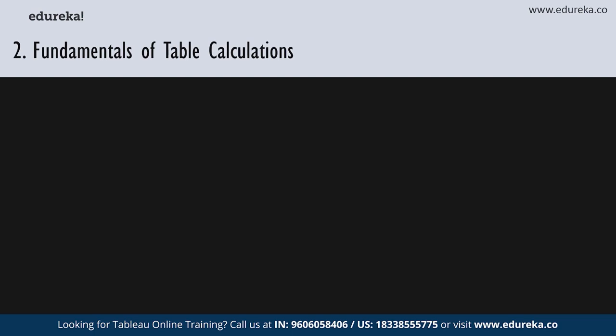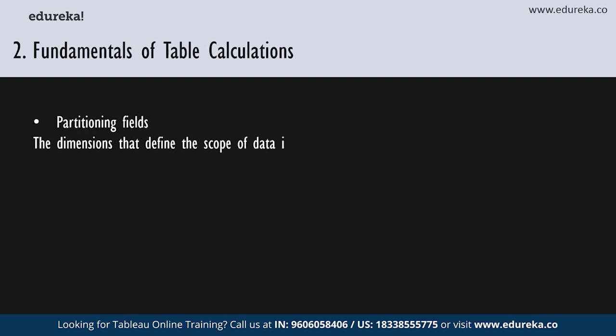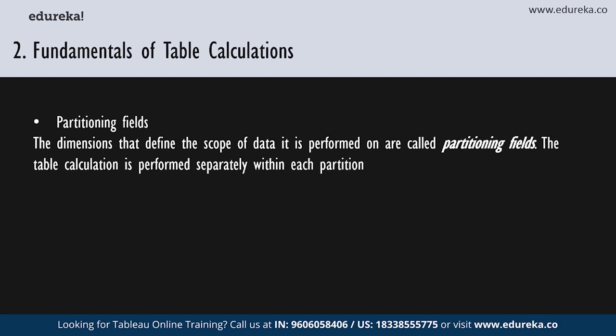When you add a table calculation, you must use all the dimensions in the level of detail either for partitioning or scoping, or for addressing or direction. The dimensions that define the scope of data the calculation is performed on are called partitioning fields. The table calculation is performed separately within each partition. Partitioning fields break the view up into multiple sub-views or sub-tables, and then the table calculation is applied to the marks within each such partition.